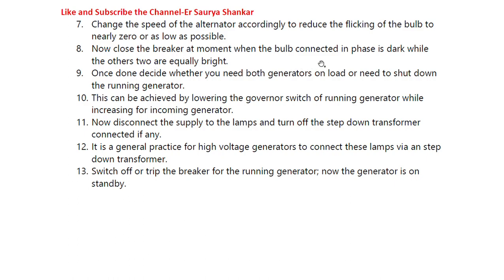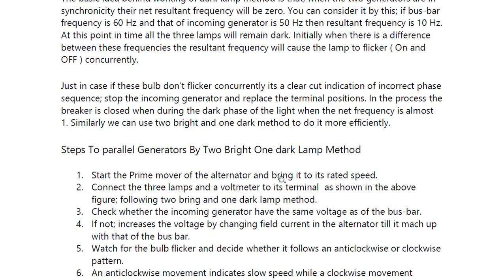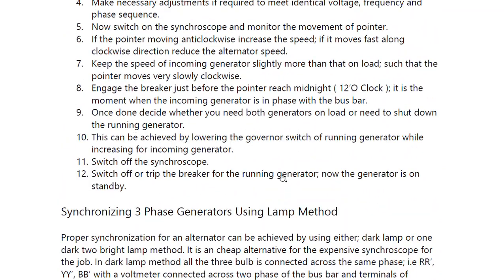Close the breaker at the moment when the bulb connected in phase is dark while the other two are equally bright. Once done, decide whether you need both generators on load or need to shut down the running generator — lower the governor switch of the running generator while increasing it for the incoming generator. Disconnect the supply of the lamps and turn off the step-down transformer if any, as it is common practice for high-voltage generators to connect lamps via a step-down transformer. Switch off or trip the breaker for the running generator; it is now on standby.